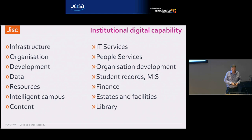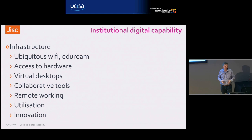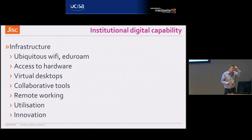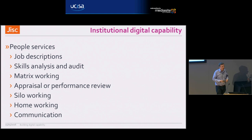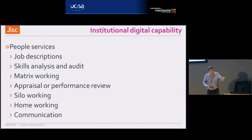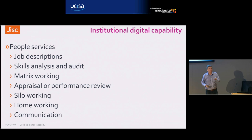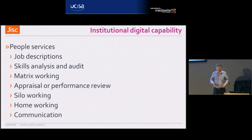When you look at all these elements, you realise you've got silos — departments where people have great IT services but it doesn't extend elsewhere. Digital capability isn't just dependent on staff skills — that's a critical part, but it's also about these departments having digital capability. For example, in terms of infrastructure: eduroam so you can go anywhere, access to virtual desktops so you can work anywhere, access to collaborative tools, remote working, room utilisation, innovation management. Just go to jobs.ac.uk and download some job descriptions for 'lecturer' — see how many mention the word 'digital' or even 'technology.'